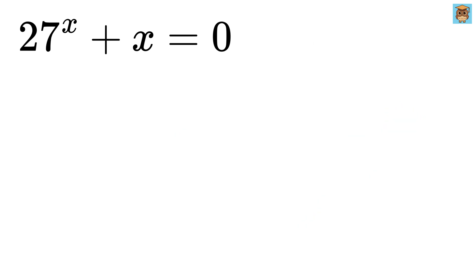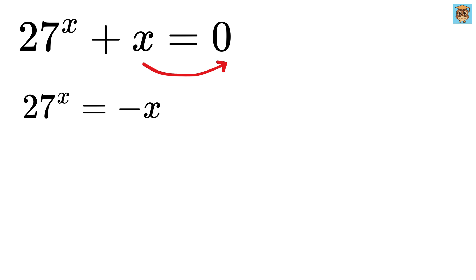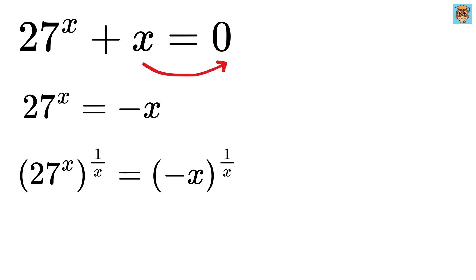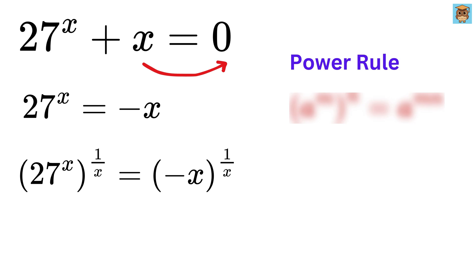Let us start. As a first step, we can take this x on the right-hand side to make it as 27 raised to x equals minus x. Now we can raise both sides to the power of 1 over x. So we get 27 raised to x, whole raised to 1 over x, equals minus x raised to 1 over x. We will be using the power rule where a to the m, whole raised to n, equals a to the m times n.